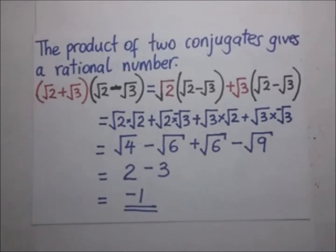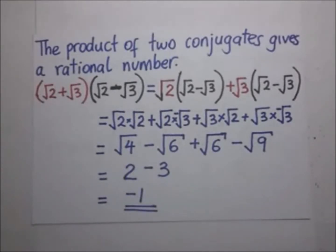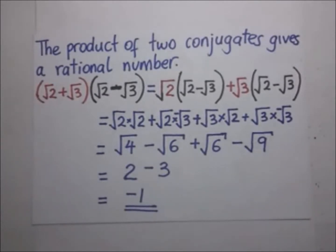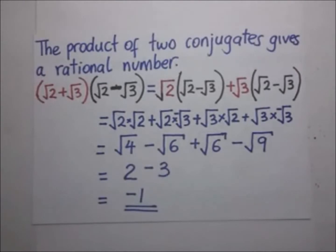Now, what happens when we multiply these two conjugate surds? When we multiply two conjugate surds, we get what we call a rational number — a number that can be expressed in the form of a fraction. This is where the term rationalizing comes from. So when we are rationalizing a surd, we actually multiply it with its conjugate, and that process is what we call rationalizing.